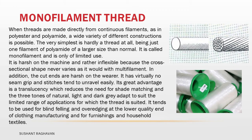In addition, the cut ends are harsh on the wearer. It has virtually no seam grip and stitches tend to unravel easily. Its great advantage is a transparency which reduces the need for shade matching, and three tones of natural, light, and dark gray adapt to suit the limited range of applications for which the thread is suited. It tends to be used for blind hemming and overedging at the lower quality end of clothing manufacturing and for furnishing and household textiles.